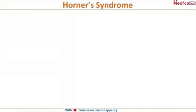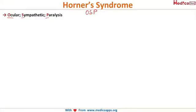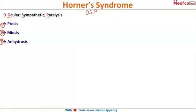Horner's syndrome is also known as OSP — ocular sympathetic paralysis. The three components you must remember are: ptosis (number one), miosis (number two), and anhydrosis (number three). As soon as you hear Horner's syndrome, these three words should immediately come to mind.